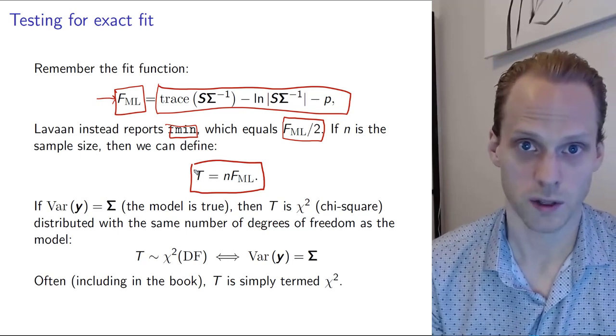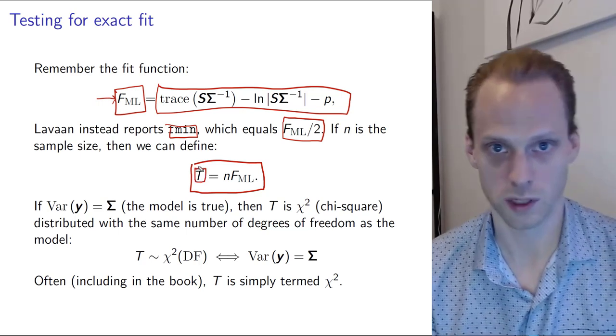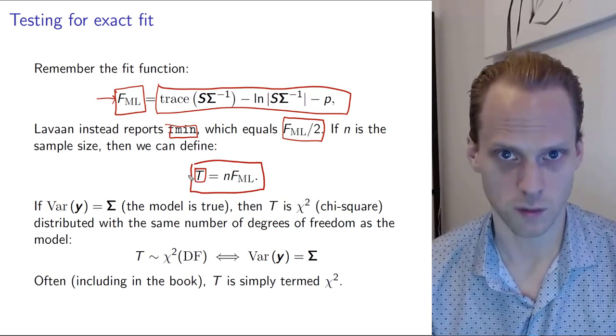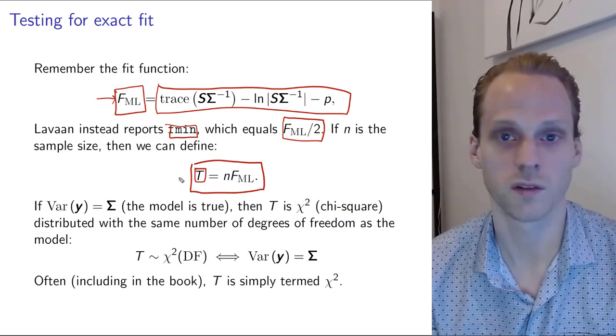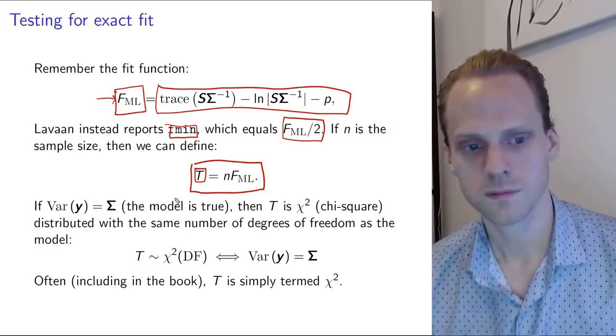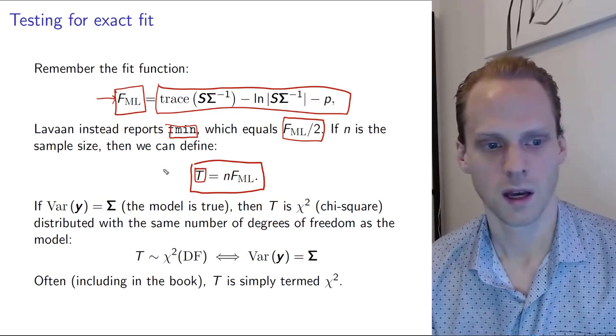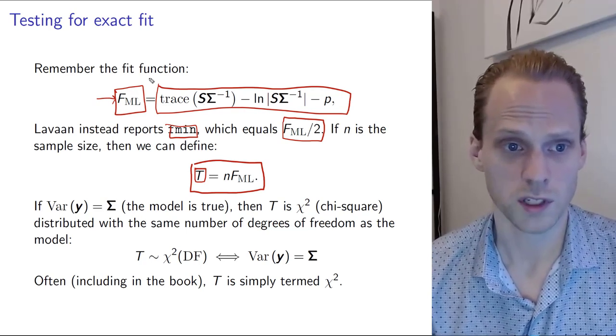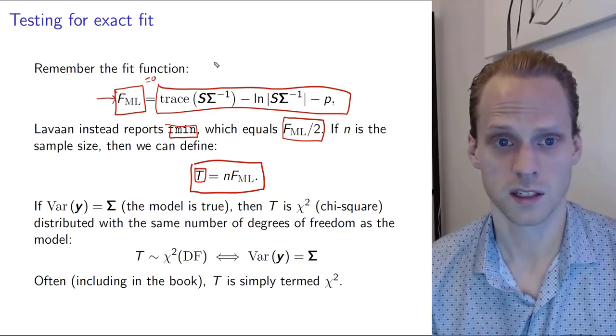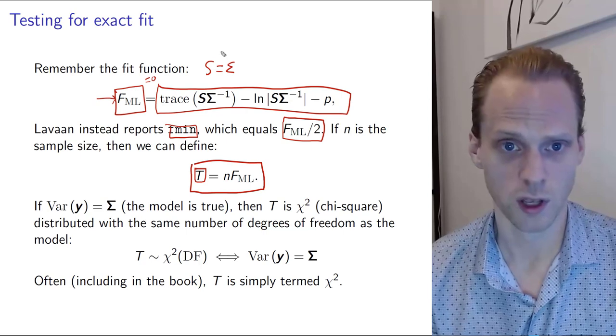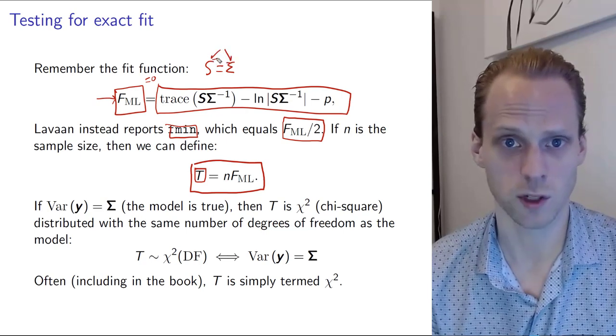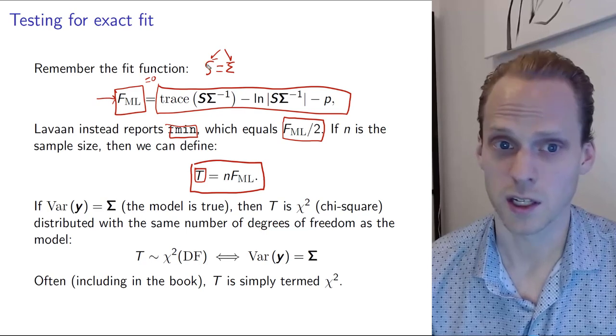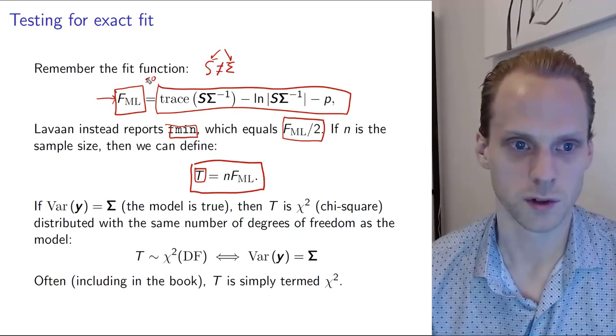This T equals n times FML is always reported. This is probably the most important statistic we find in structural equation modeling that you always see reported in papers. It's the first thing the software will report. This T is a summary statistic of the fit. FML will be zero if S perfectly resembles sigma, a perfect model where our implied structure equals the observed covariance structure.